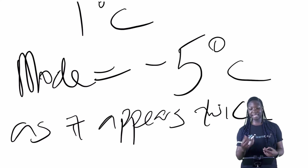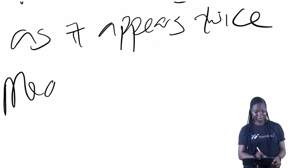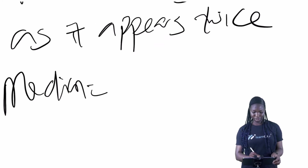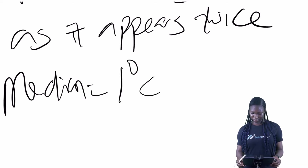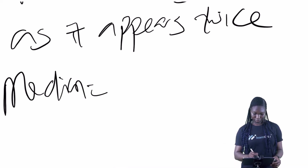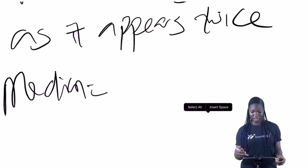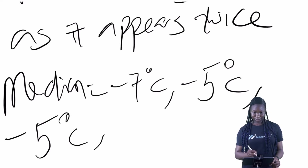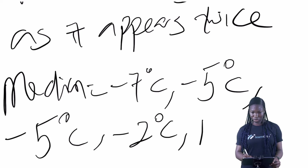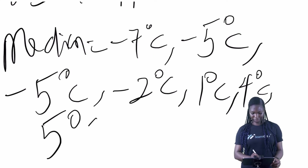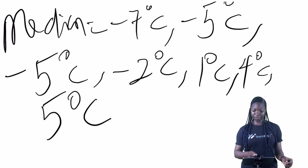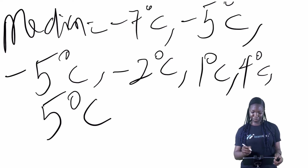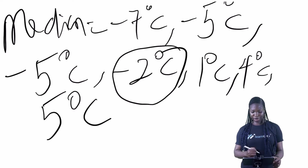Now find the median. We arrange in order, where we have: minus 7°C, minus 5°C, minus 5°C, minus 2°C, 1°C, 4°C, and 5°C. So we have 1, 2, 3, 4, 5, 6, 7 — so our median will be minus 2 degrees Celsius.